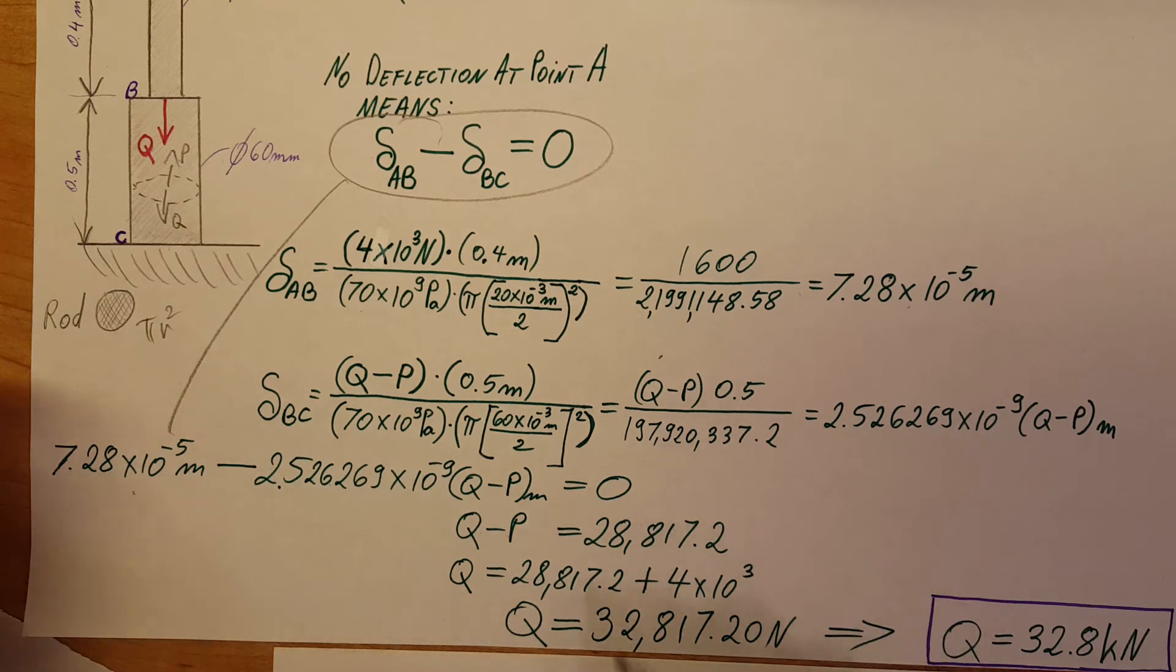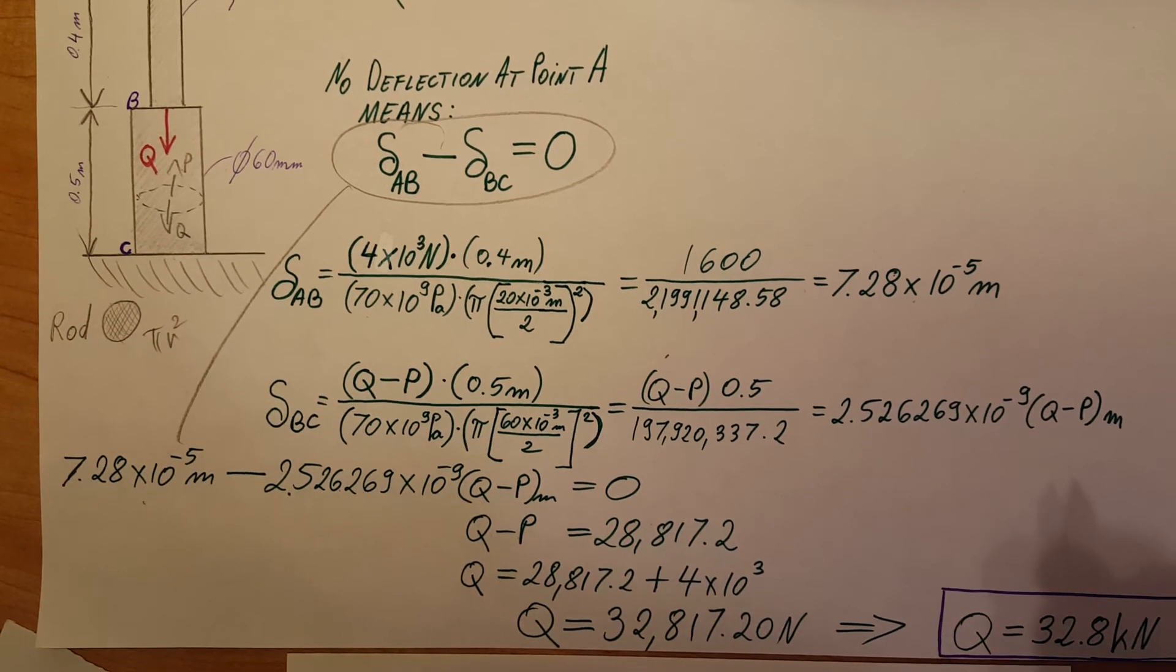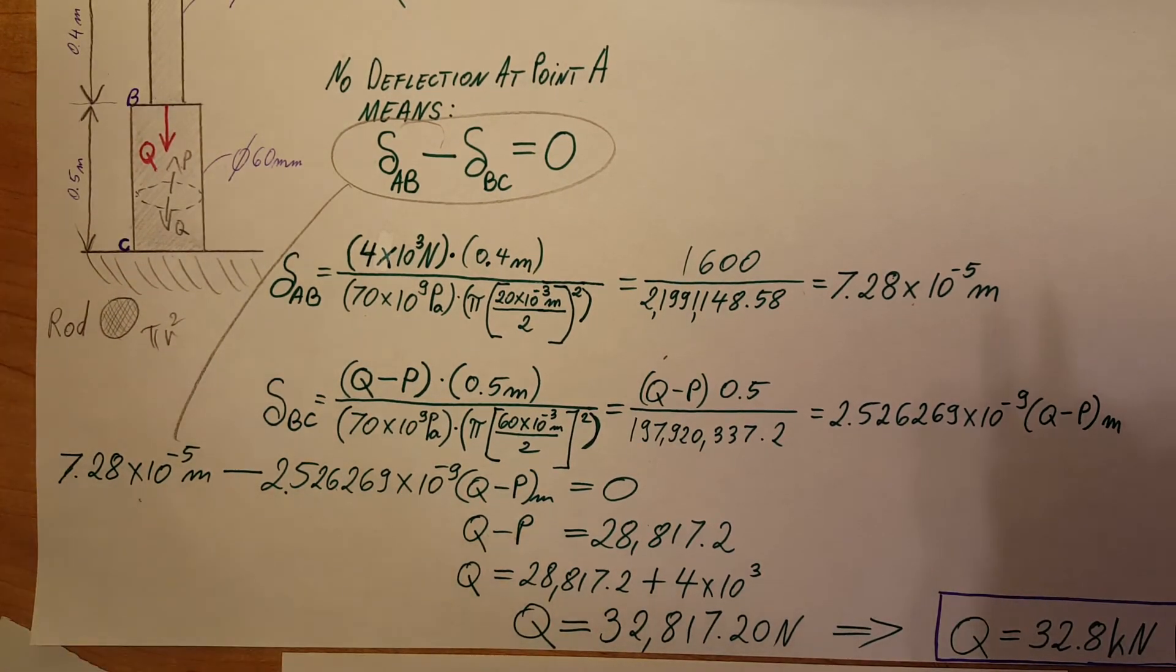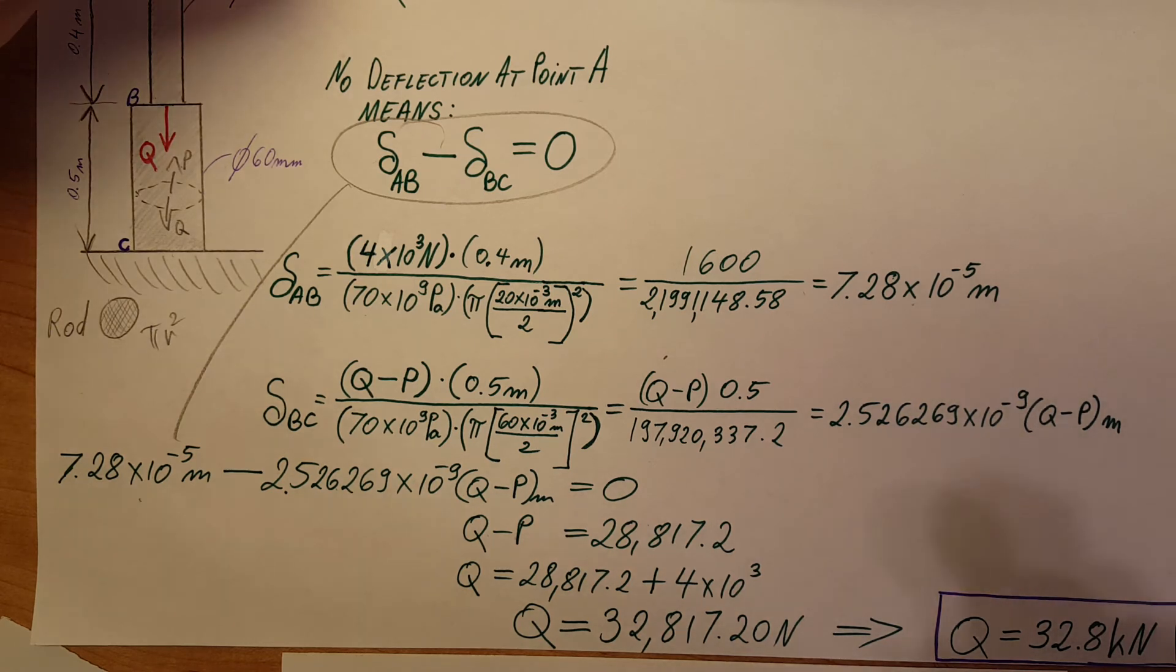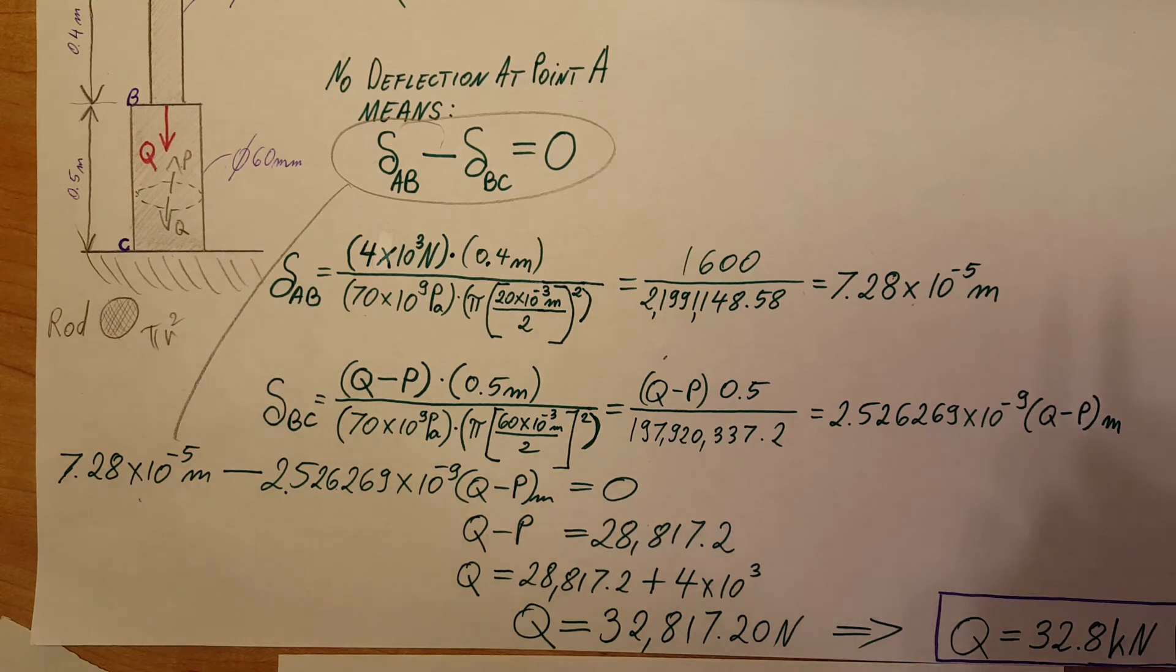Q is equal to 32,817.2 newtons. Let's convert it back to kilonewtons because P was given in kilonewtons. So Q is 32.8 kilonewtons.